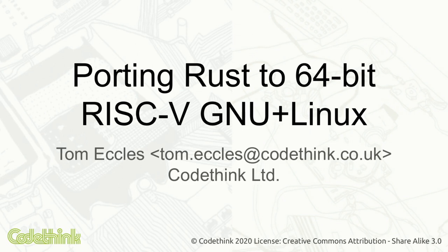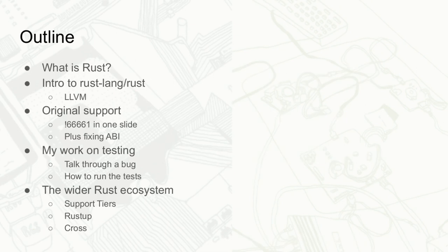I'm going to be talking about porting 64-bit RISC-V for Linux to Rust to target that. First I'll briefly touch on what Rust is, then talk a little bit about Rust's compiler, then we'll look at the pull request adding support for RISC-V to the Rust compiler. The main bit of the talk is working through a bug that I fixed, and then we'll finish looking at RISC-V support in the wider Rust ecosystem.